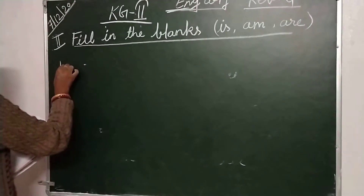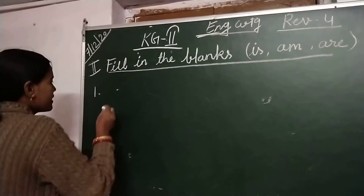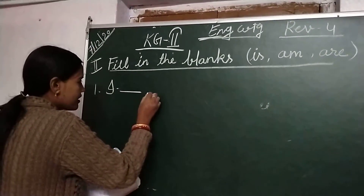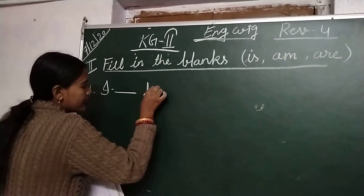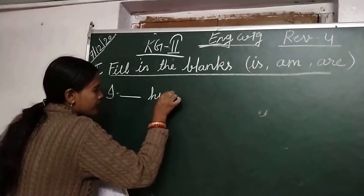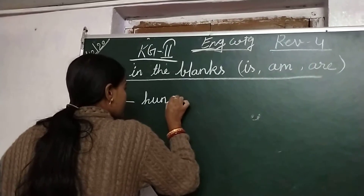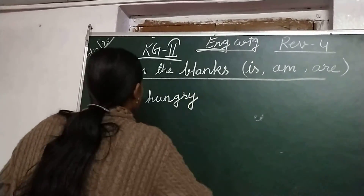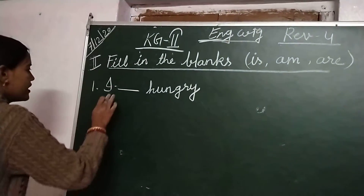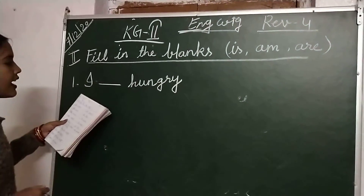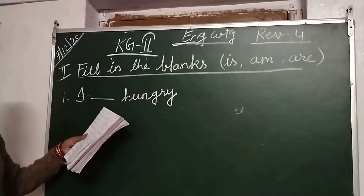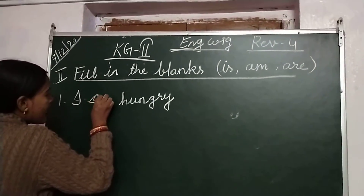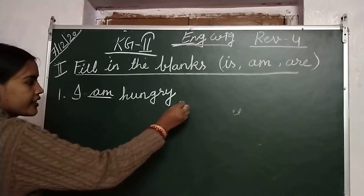So children, look at the blackboard. Number 1 is: I dash hungry. Write: I am hungry.